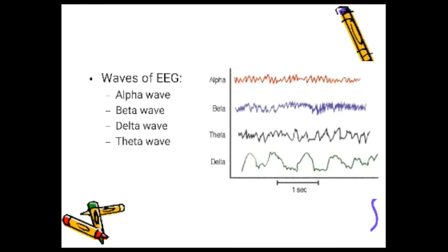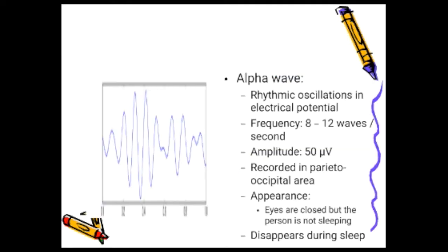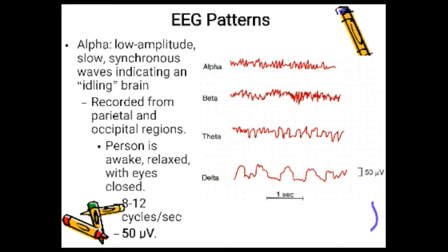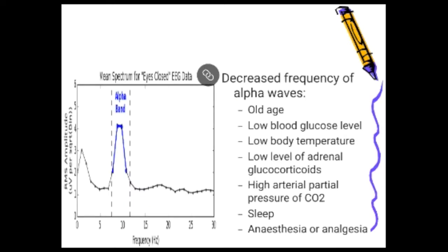Important waves of EEG are alpha, beta, delta, and theta waves. Alpha waves are rhythmic oscillations in electrical potential with a frequency of 8 to 12 Hz and amplitude of 50 microvolts. They are recorded from parietal and occipital areas. They appear when eyes are closed but the person is not sleeping, and disappear during sleep. Alpha wave frequency decreases in old age, with low blood sugar, low body temperature, low adrenal glucocorticoids, increased arterial PCO2, during sleep, and under anesthesia and analgesia.